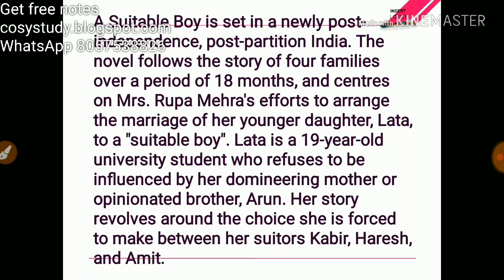The novel follows the story of four families over a period of 18 months and centers on Mrs. Rupa Mehra. The main character, Rupa Mehra, attempts to arrange the marriage of her younger daughter Lata to a suitable boy. Lata is a 19-year-old university student who refuses to be influenced by her domineering mother or opinionated brother Arun. Her story revolves around the choice she is forced to make between her suitors: Kabir, Harish, and Amit.